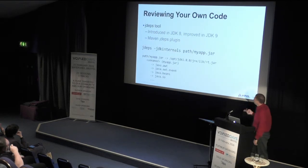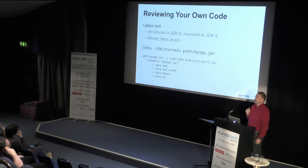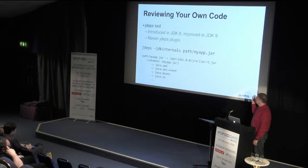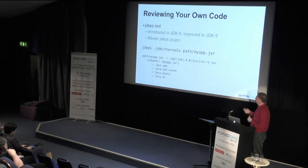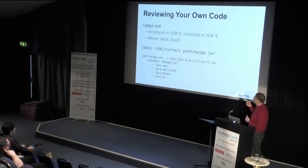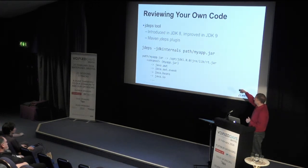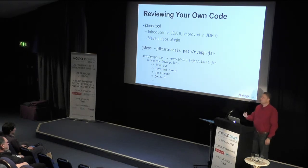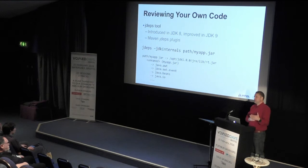To help you review your own code, there's JDeps — a tool introduced in JDK 8 and being enhanced in JDK 9. There's already a Maven JDeps plugin. You can run JDeps on your application JAR file and it will give you a list of what it actually depends on, which is a good way to find dependencies that would be a problem in JDK 9.